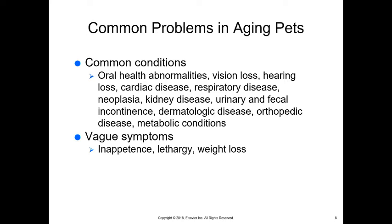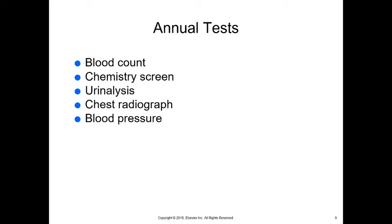Annual tests you want to perform include a blood count looking at red and white blood cells, a chemistry screen showing what the organs are doing, a urinalysis revealing what's happening in the urinary tract, and when compared with the chemistry screen, provides a broader picture of what's happening in the body. A chest radiograph shows what's happening within the lungs and heart, and blood pressure should also be measured.